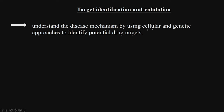Going into more detail: if I want to know the target, I first need to understand the disease mechanism. For example, if I am interested in inflammation — how does inflammation progress? There are prostaglandins and leukotrienes, with many enzymes in each pathway. I am trying to inhibit one of those enzymes. I need to understand the disease mechanism using a cellular and genetic approach so I can decide on a particular target.